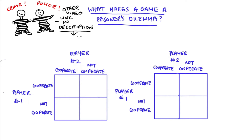If we want to think about what makes an interaction a prisoner's dilemma, we typically start with a two-by-two matrix. I'm going to be working on the left-hand side matrix first. We have two players - player one and player two - and each player has two possible strategies. They can either act cooperatively, which corresponds to the top row for player one or the left-hand column for player two, or they can not cooperate, which corresponds to the bottom row or right-hand column.